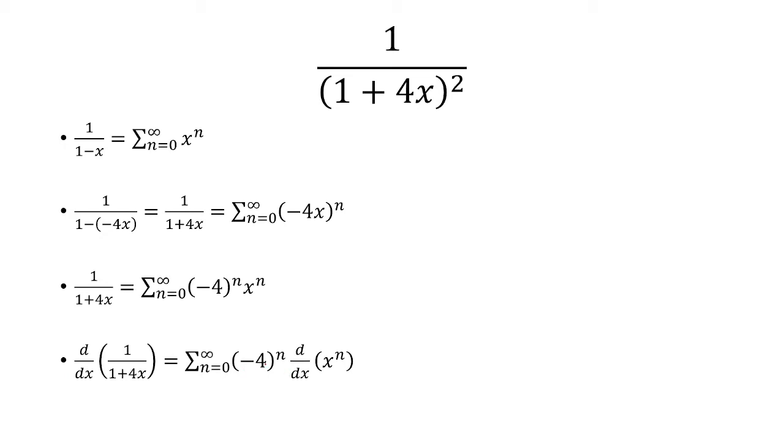You're not going to take the derivative of negative 4 to the n. That's a constant. So you just take the derivative of x to the n. The derivative of 1 over 1 plus 4x is negative 4 over (1 plus 4x) squared. The derivative of x to the n is n times x to the n minus 1.